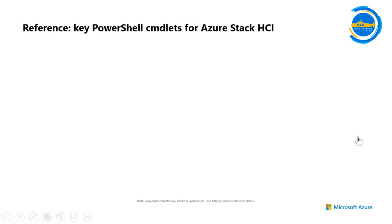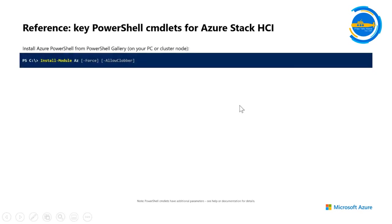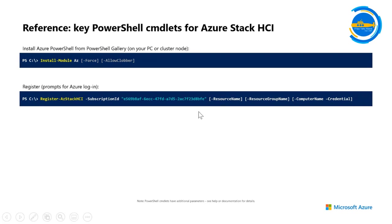That's pretty cool — I can now see my Azure Stack HCI cluster in the portal, see the nodes, and start doing some management. I could manage the whole cluster using Windows Admin Center, but I can also do it in the portal now. We're going to add more and more features so you can do a lot more from the portal. Here's a quick reference of what we covered: we installed the Azure module with one cmdlet, then used the Register-AzStackHCI cmdlet to register. The subscription ID is mandatory; resource name and resource group name are optional.